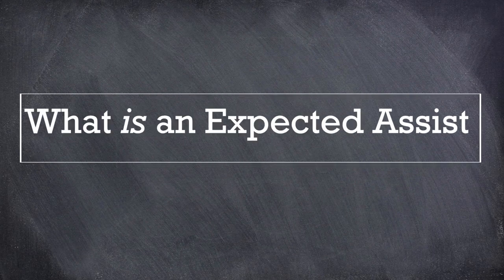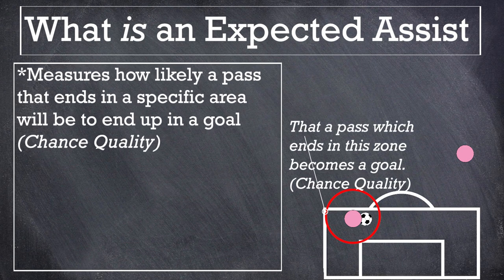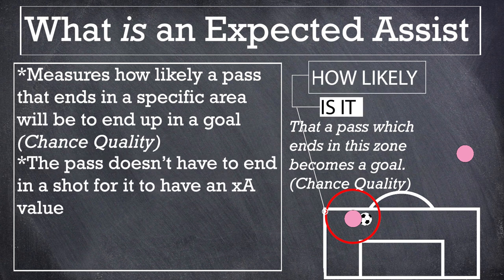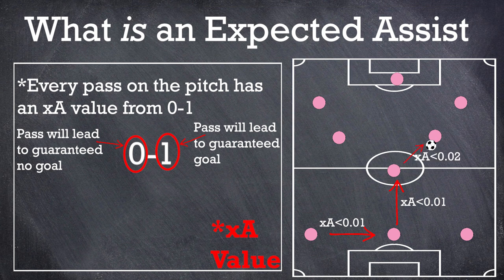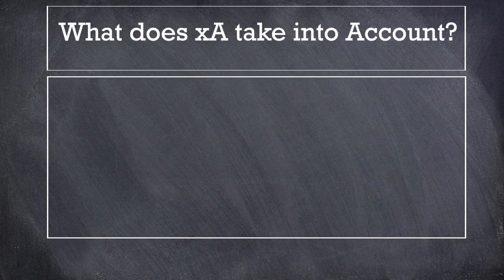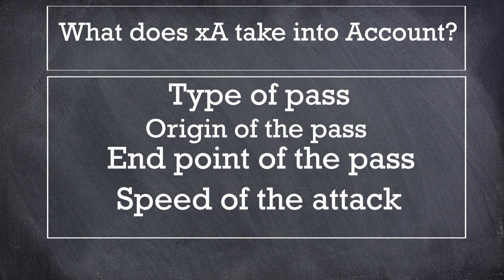So what is an expected assist? It just measures how likely it is that a pass that ends up in a specific area will end up in a goal. It is important to note that the recipient of the pass doesn't have to take a shot for that pass to have an expected assist value. That means that every pass on the pitch has an xG value, but of course a pass in your own half would have an extremely low xG value. It takes into account the type of pass, the location of the pass, the location where the pass was received, and much more.